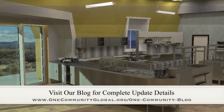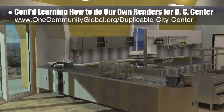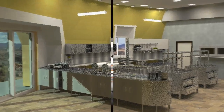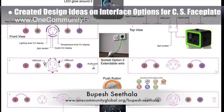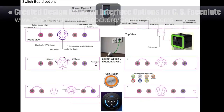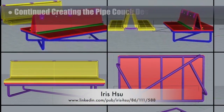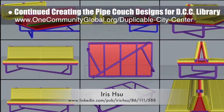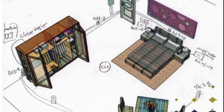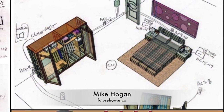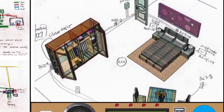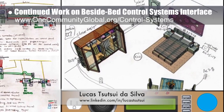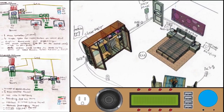This week the core team continued learning how to do our own renders for the duplicable city center. What you see here is more of the kitchen rendering with focus on long lights, spotlights, metal surfaces, shadows, and background landscape. Bupesh Sithala, interior designer, created design ideas for the faceplate of the visitor room bedside control systems interface. Iris Hsu, industrial designer, continued with additional pipe couch designs for the city center library — her 10th generation drawings focusing on more cushion details and a simplified support for the back. Behind the scenes, Mike Hogan, Automated Systems Developer, and Lucas Tsui Da Silva, 4th year computer engineering student, continued discussion on the appearance and best functional design for the bedside control systems interface.